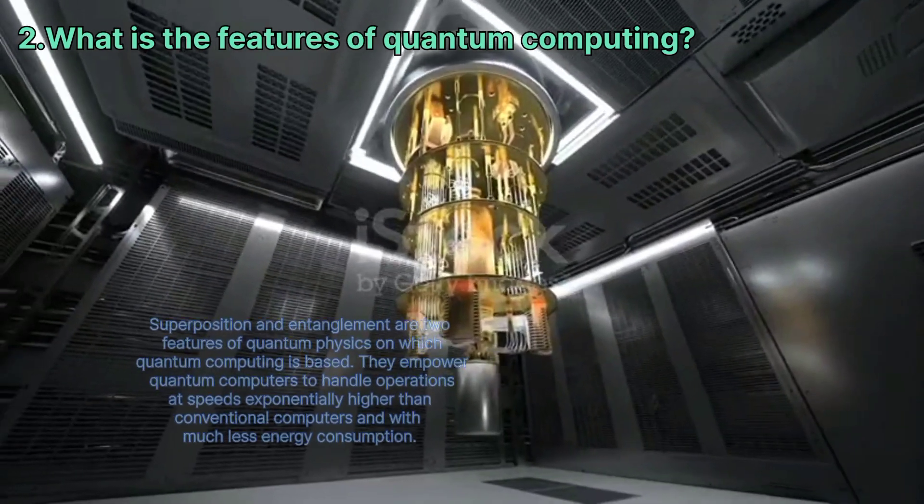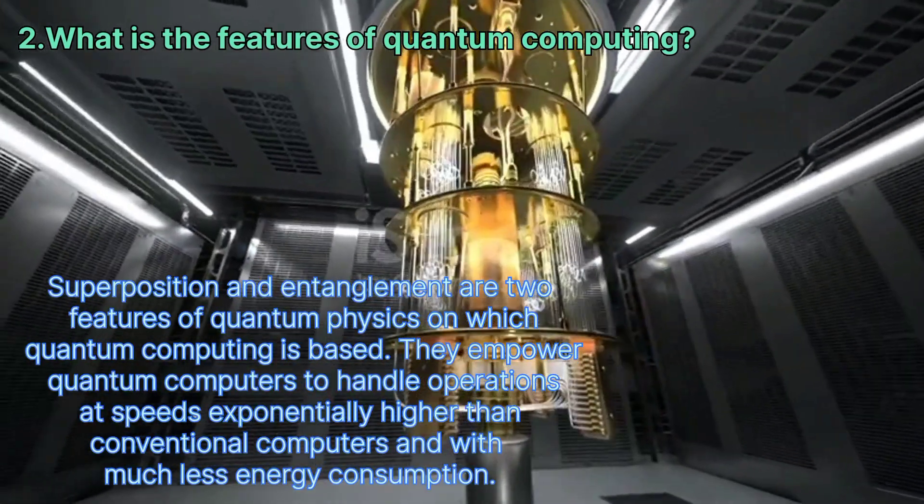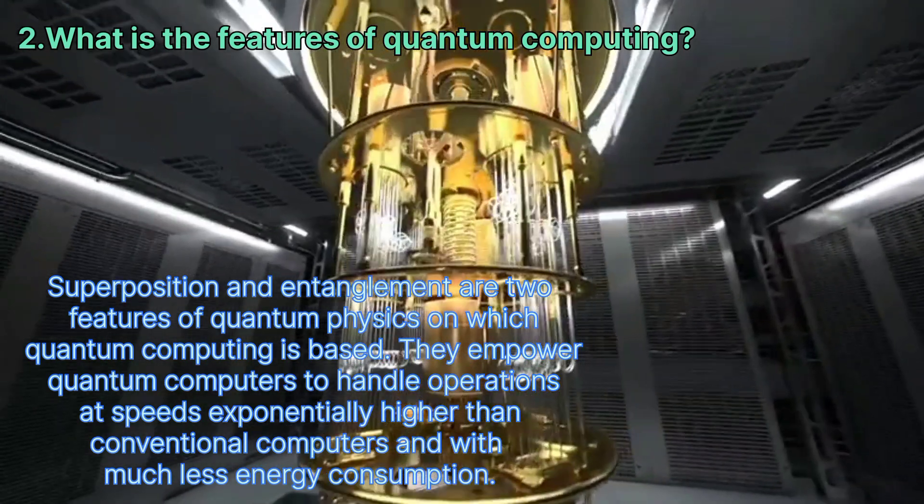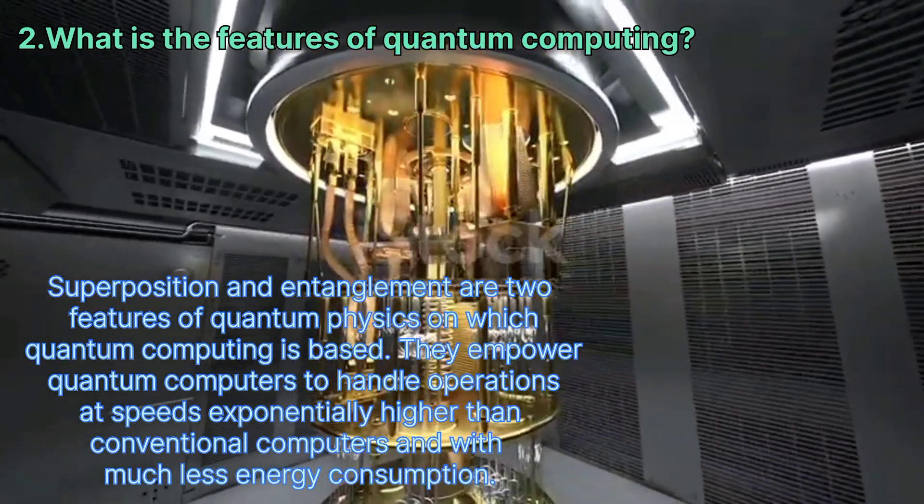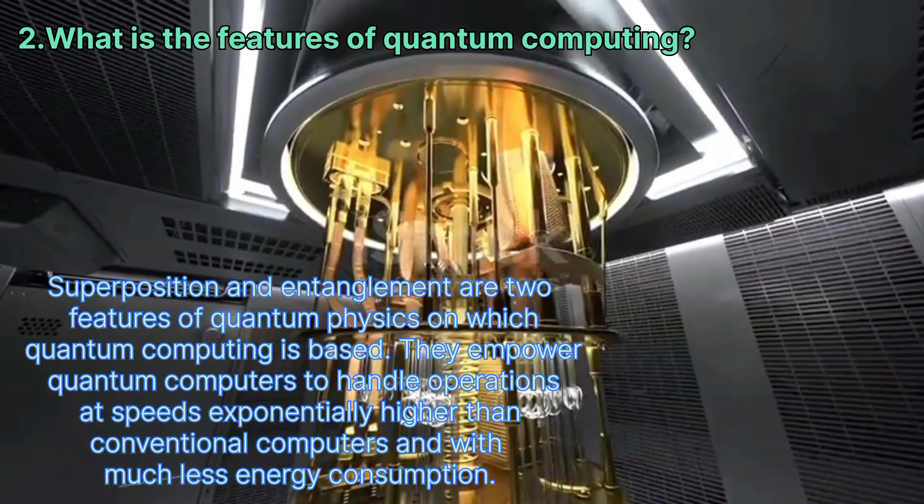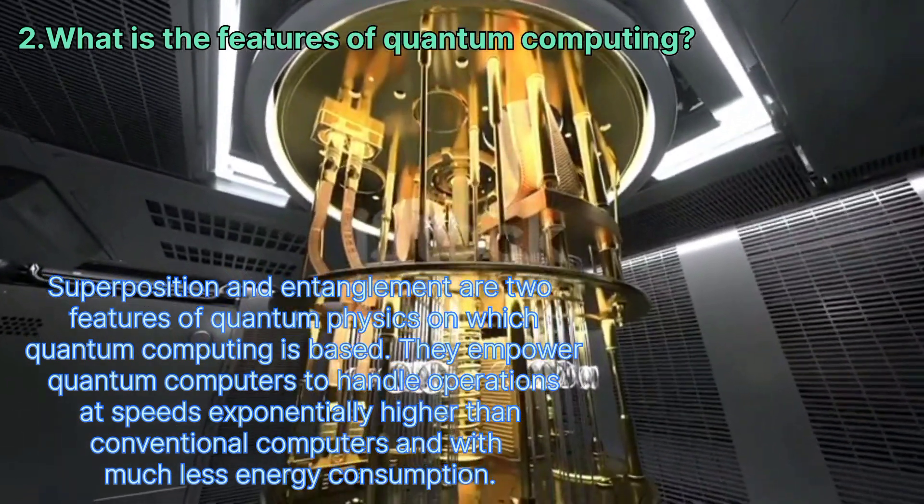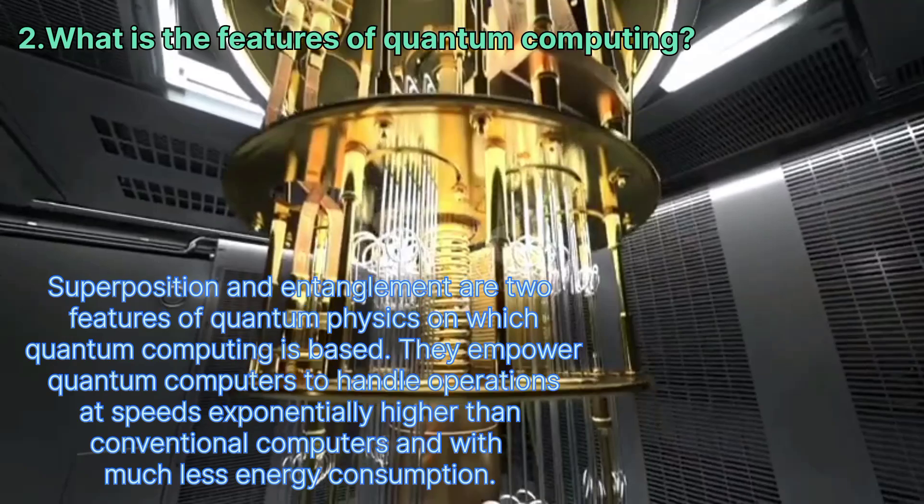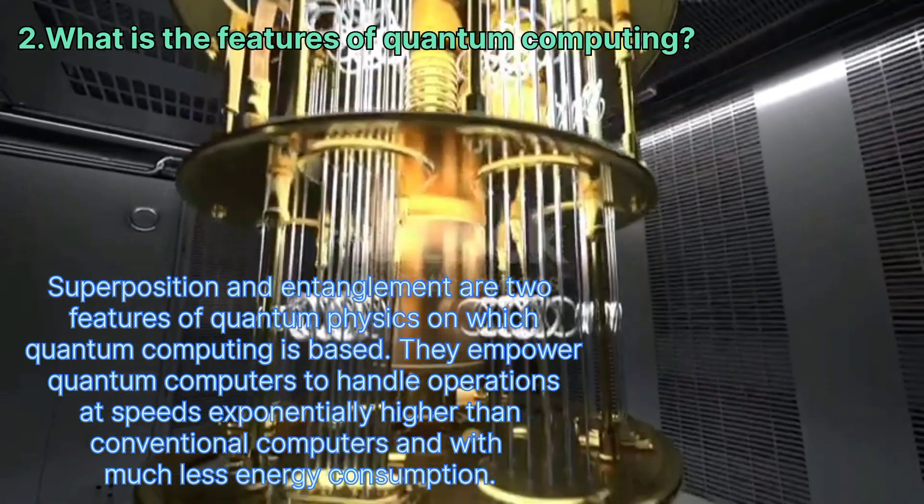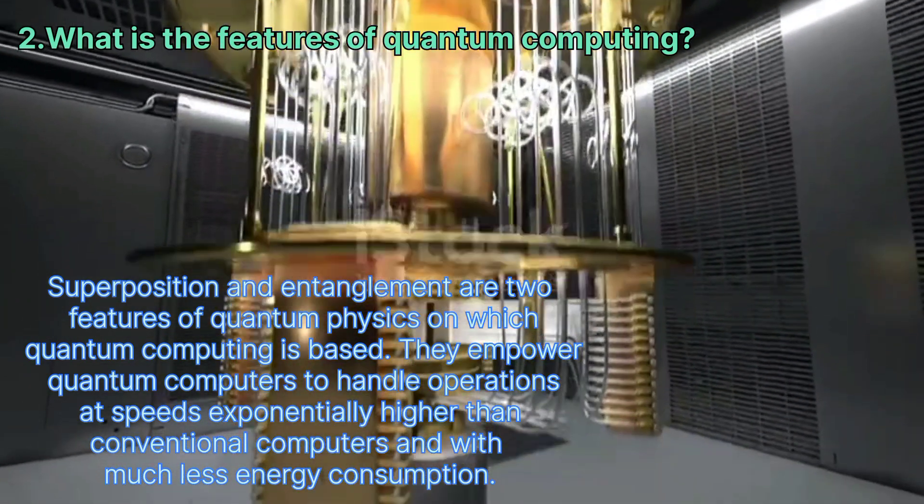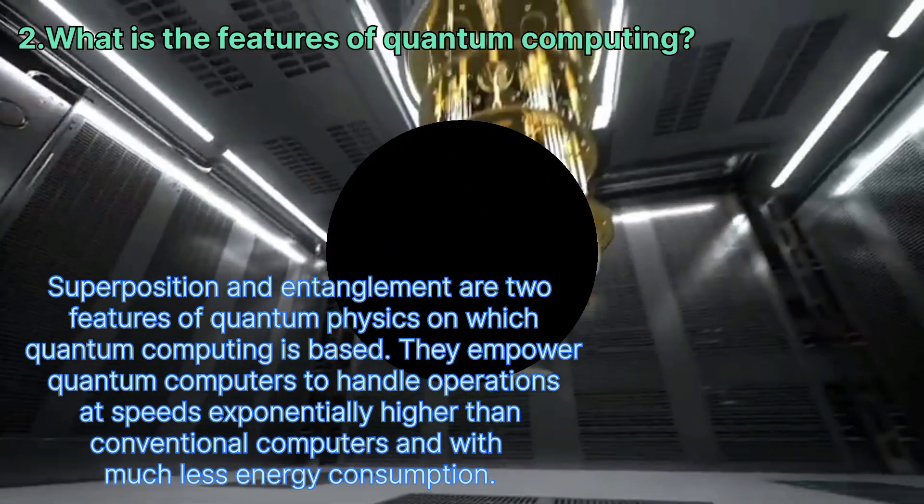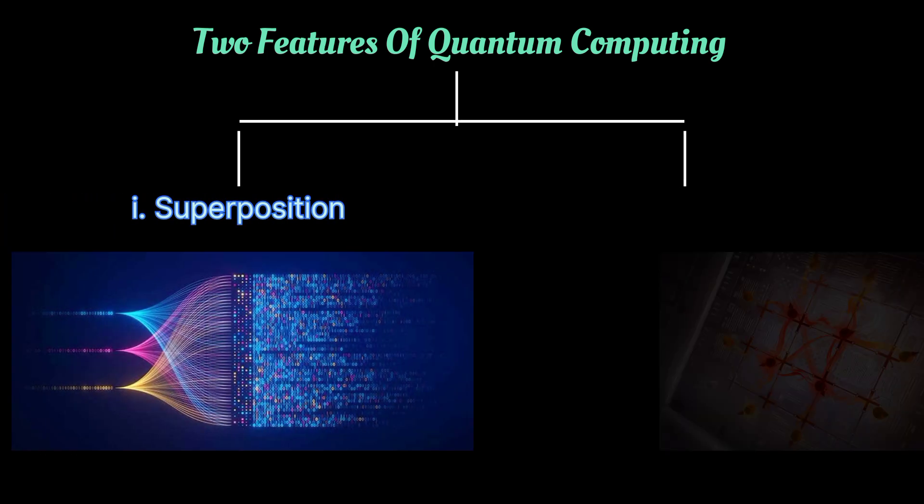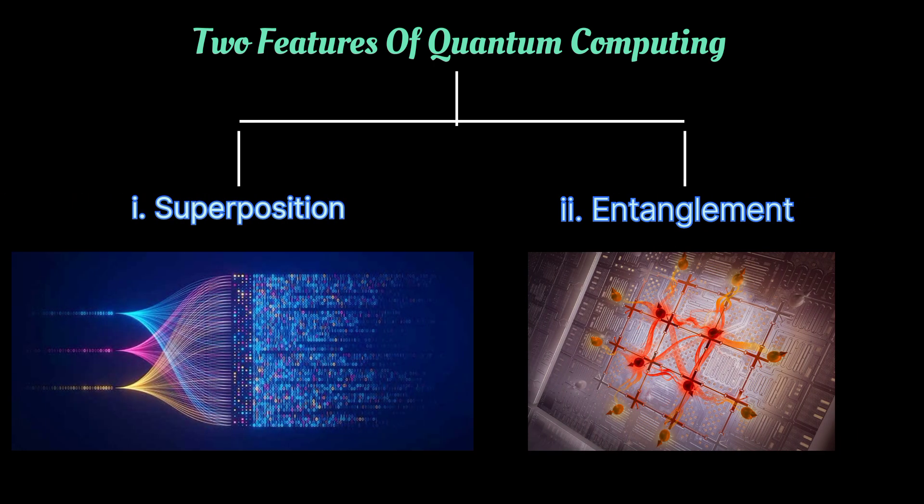What are the features of quantum computing? Superposition and entanglement are two features of quantum physics on which quantum computing is based. They empower quantum computers to handle operations at speeds exponentially higher than conventional computers and with much less energy consumption. There are two types: superposition and entanglement.